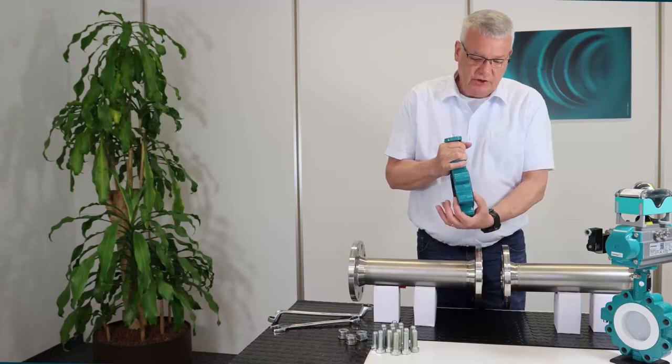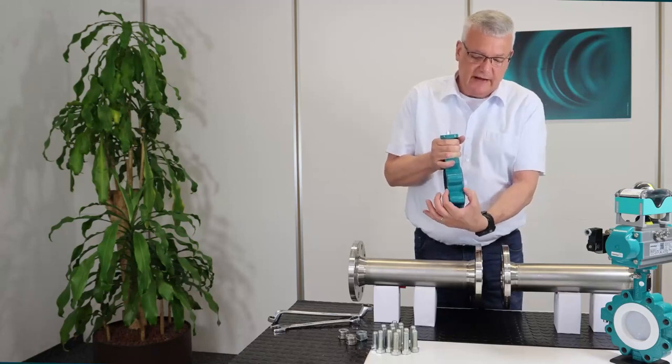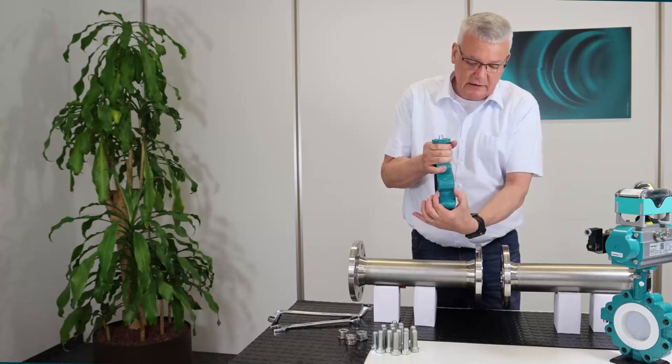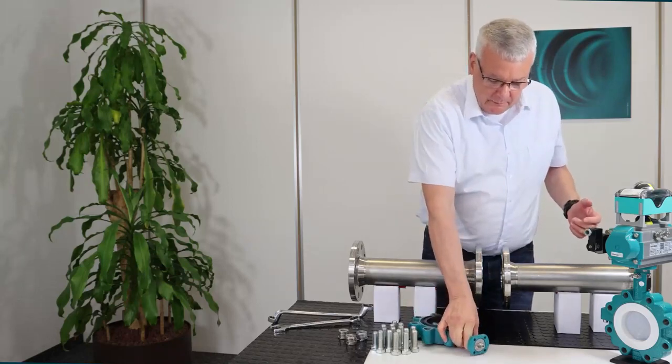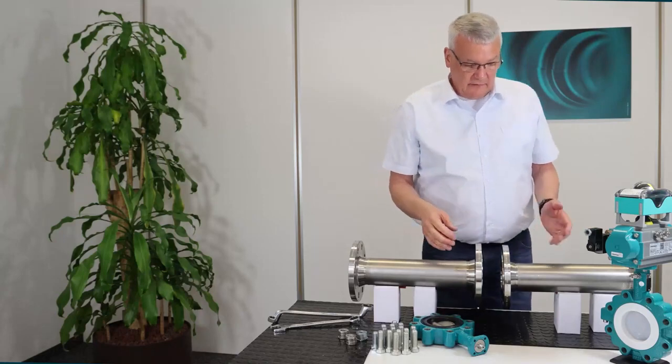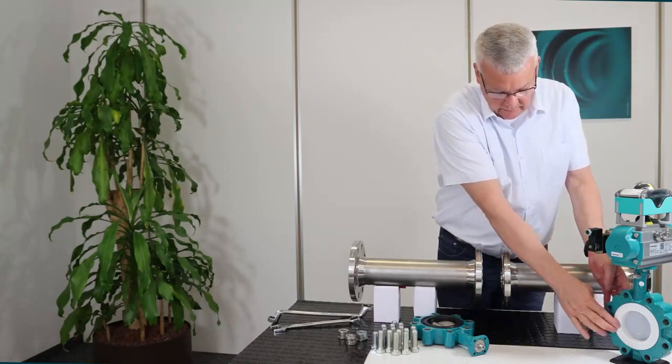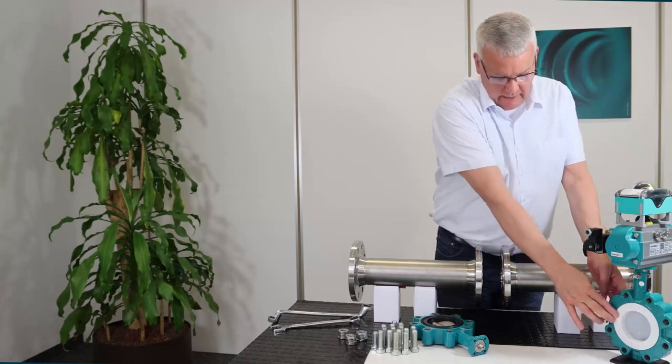The face-to-face dimension of a rubber-lined butterfly valve is the edge of the body, so this line here, whereas on the PTFE-lined butterfly valve, the face-to-face dimension is the flange surface of the liner that you see here.